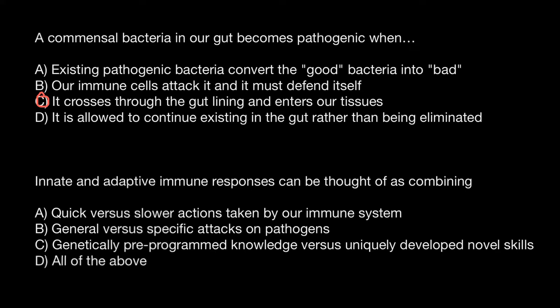The next question: innate and adaptive immune responses can be thought of as combining — and let's check the variants. Variant A: quick versus slower actions taken by our immune system. Quick would be characteristic of the innate immune system, and slower would be characteristic of the adaptive immune system. Variant B: general versus specific attacks on pathogens. Again, general is characteristic of innate immunity and specific is characteristic of adaptive immunity.